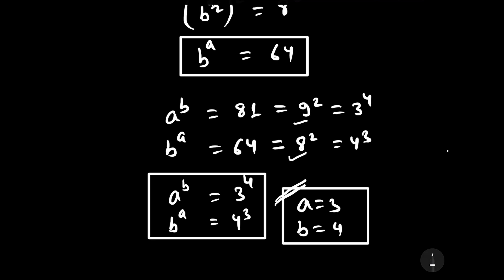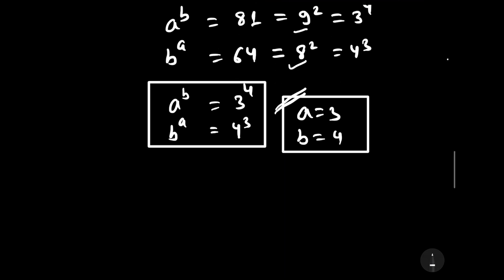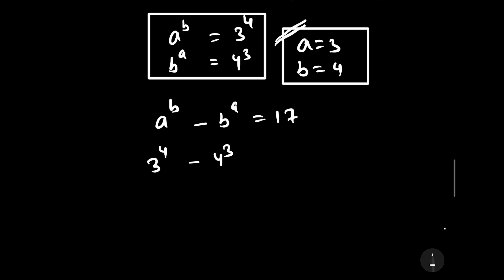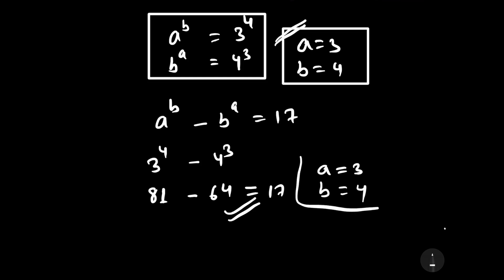Let us check this by putting the values into the original equation. Our original equation was a to the power b minus b to the power a is equal to 17. Putting a equal to 3 and b equal to 4: 3 to the power 4 minus 4 to the power 3 is equal to 81 minus 64, which is equal to 17. Hence it is satisfying the original equation, so our solution for a and b is 3 and 4.